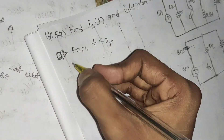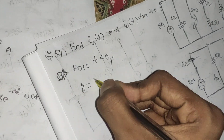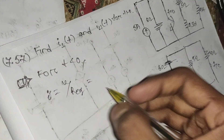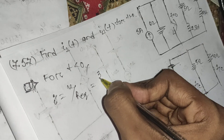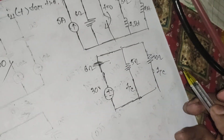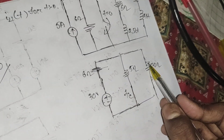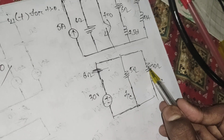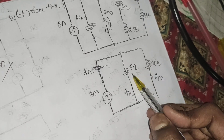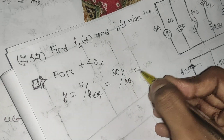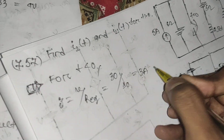With both inductors replaced by short circuits, the total current is i = V / R_equivalent. The voltage is 30V. For R_equivalent: 5 ohms and 20 ohms are in parallel, giving 4 ohms; 4 ohms and 6 ohms are in series, giving 10 ohms. So total current = 30 / 10 = 3 amperes.